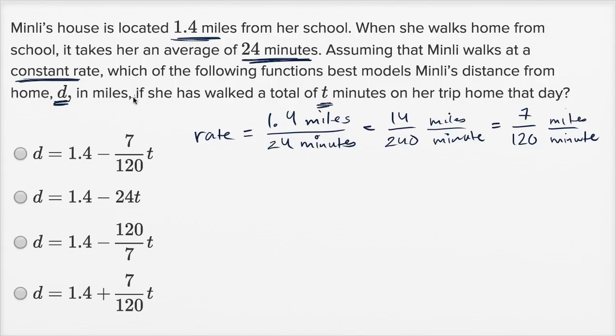Now we need to figure out D. We have to be very careful. D is Minley's distance from home. She's leaving from school, and it's her distance from home. Remember, her home is 1.4 miles from her school. So there's a bunch of ways that we can tackle it, but maybe the easiest one is, what's her distance from school?